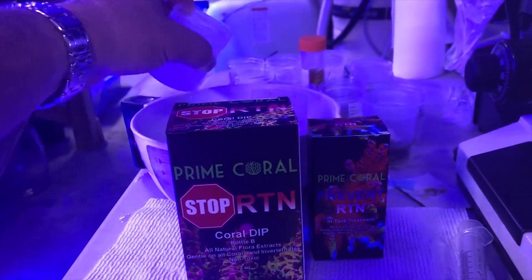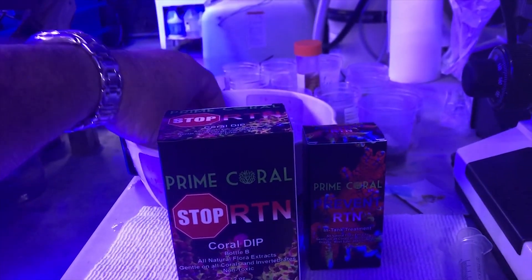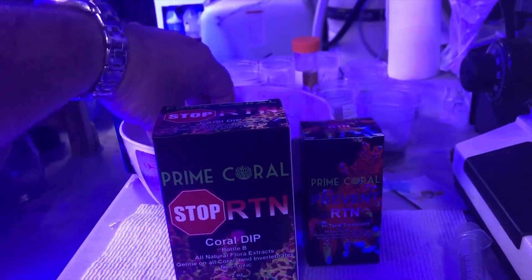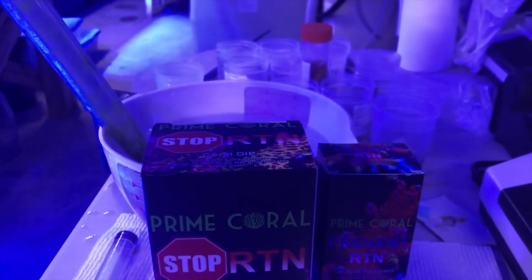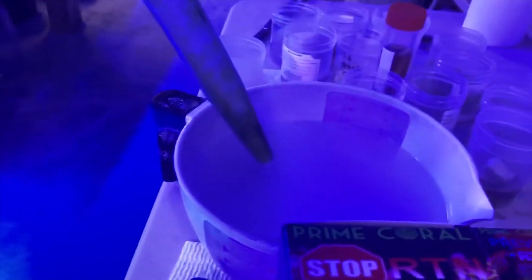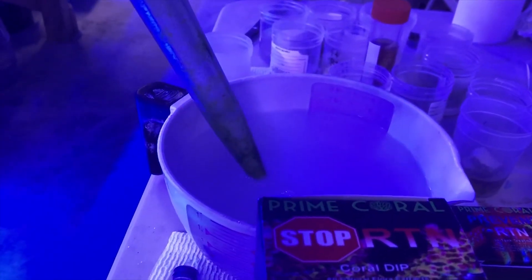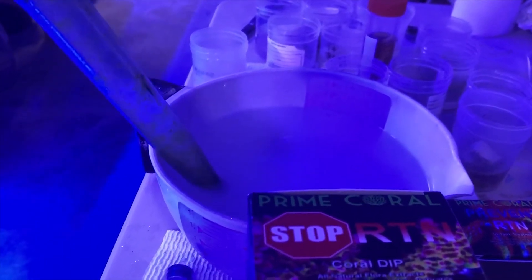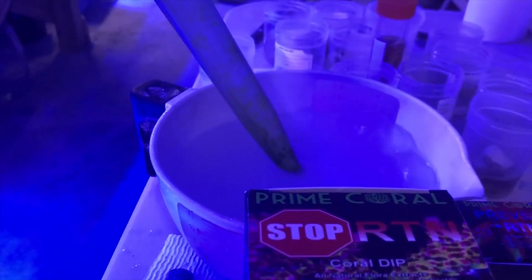Again, this is the Prime Coral Stop RTN coral dip. It's the only treatment that's actually effective at eliminating the parasites off of your coral that's RTN-ing or STN-ing. The other thing I like to do is use a turkey baster and just really blast the area of the coral where the RTN is. That way, you're getting the mucus off of the coral and getting underneath the mucus and the dead tissue to make sure that the phylaster is getting exposed to the medication during the treatment.